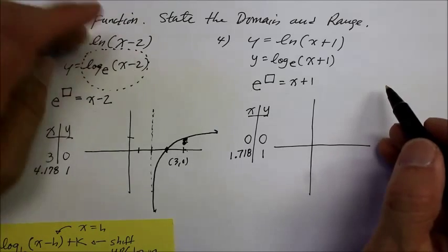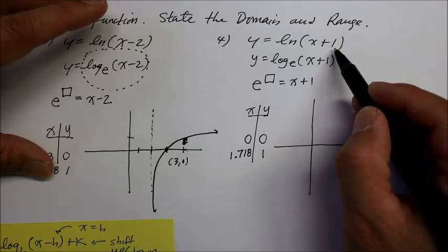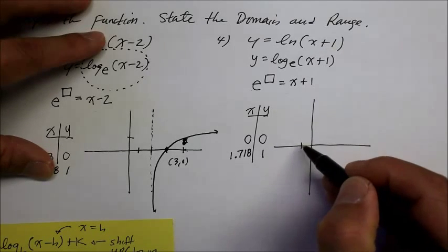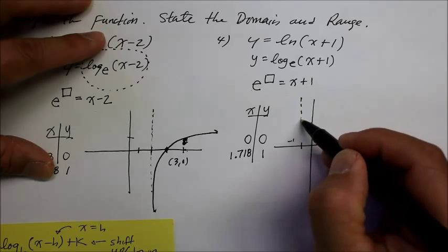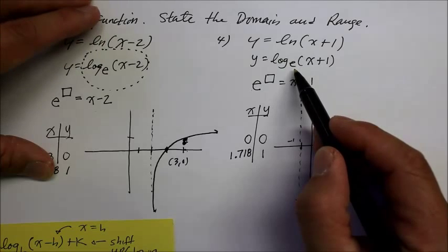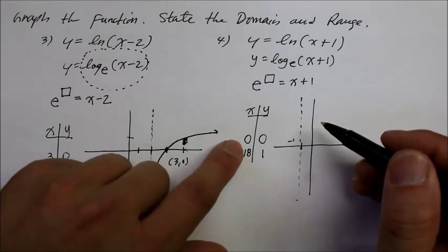But once again, the h, the vertical asymptote, is negative 1. Solve for 0, or solve for the x becomes negative 1. So here's negative 1, and that's my vertical asymptote. And since e again is base b is greater than 1, it's going to go up and to the right.